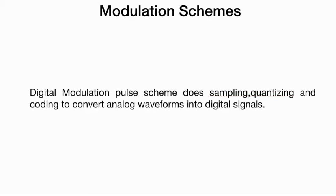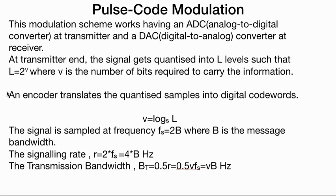Moving to the Modulation Scheme. Digital Modulation Pulse Scheme does sampling, quantizing, and coding to convert analog waveform into digital waveform. We know why we do it, but how we do it, we are looking at that. First one in this scenario is Pulse Code Modulation. This modulation scheme works having an analog to digital converter, a transmitter, and a digital to analog converter at the receiver.